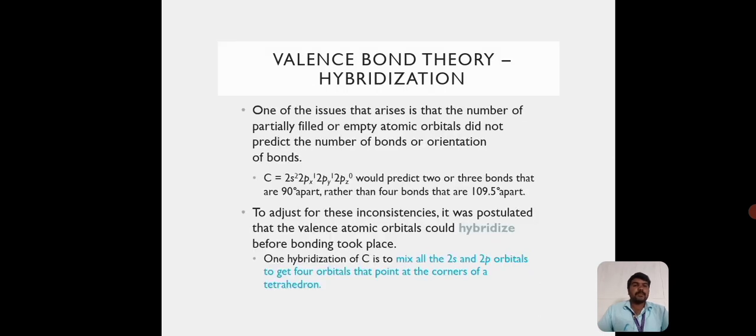Valence Bond Theory Hybridization. One of the issues that arises is that the number of partially filled or empty orbitals did not predict the number of bonds or orientation of bonds. For example, carbon's electronic configuration 2S2 2Px1 2Py1 2Pz0 would predict 2 or 3 bonds that are 90 degrees apart rather than 4 bonds that are 109.5 degrees apart. To adjust for these inconsistencies, it was postulated that the valence atomic orbitals would hybridize before bonding took place.